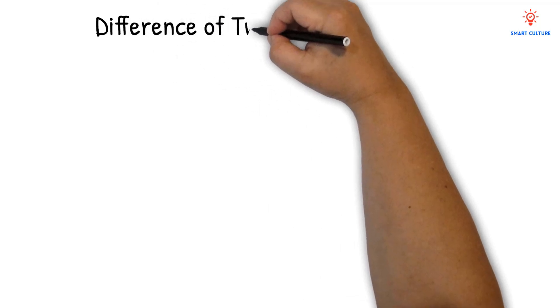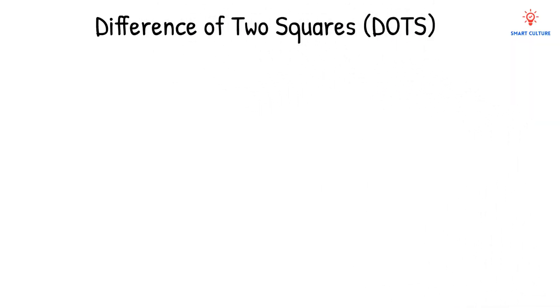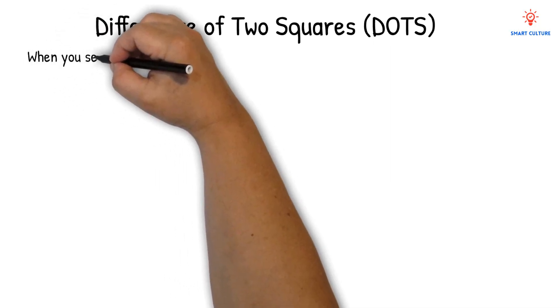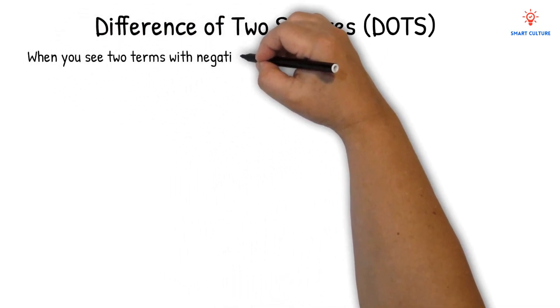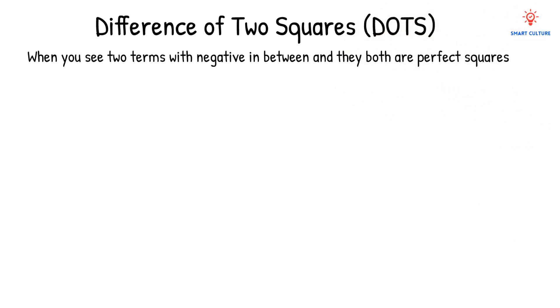This video is all about the difference of two squares, which we can refer to as DOTS. This is when you see two terms with negative in between, and they both are perfect squares.